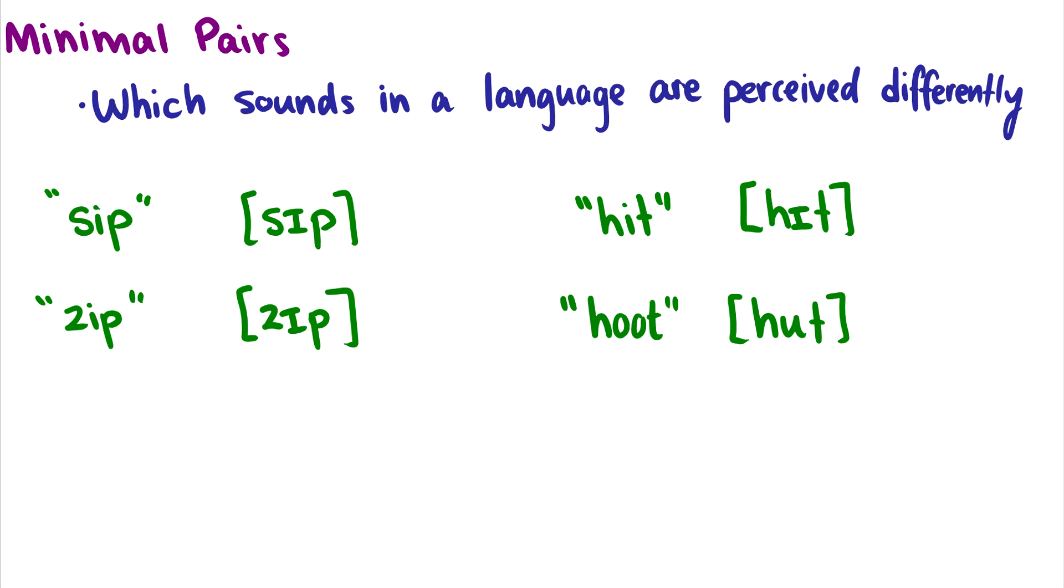In other words, one way to think about this is how does your brain sort sounds? For instance, if I say the word sip and zip, let's take a look at the transcriptions. They're exactly the same except for one segment. S and z are different, but everything else is exactly the same. So this forms what we call a minimal pair. And what this tells us is because the meanings are different for these words, this means that the sound s and the sound z are different in the language.